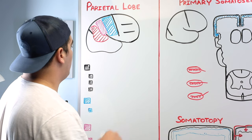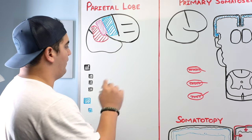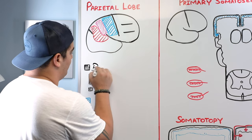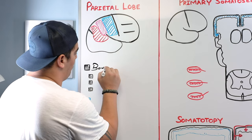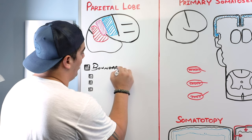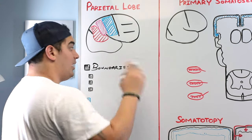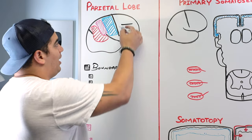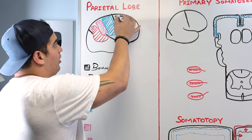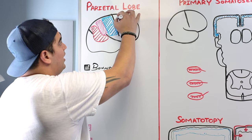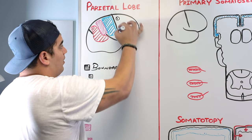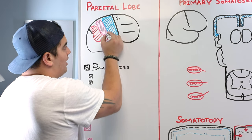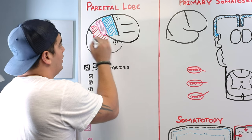Let's get started on the basic anatomy of the parietal lobe. The first thing we have to talk about is the boundaries, so we can tell where the parietal lobe starts and ends. I like to remember the boundaries based upon three ways. We have an anterior boundary, which is the central sulcus. We have an inferior boundary, which is your lateral sulcus or your Sylvian fissure.